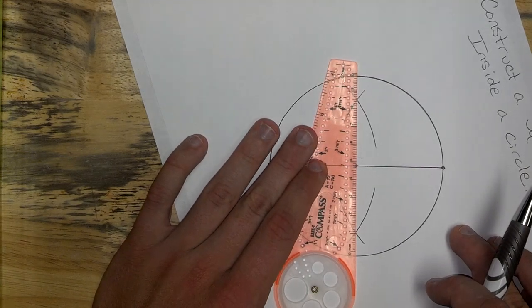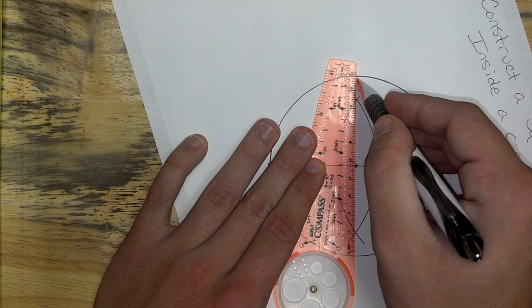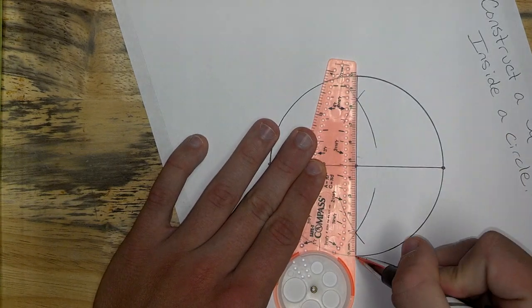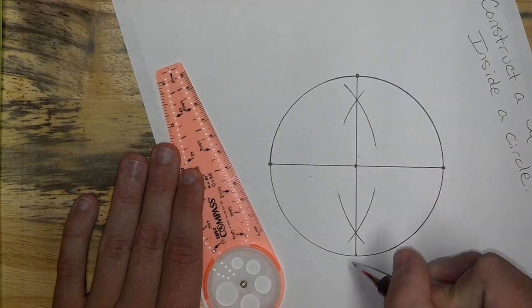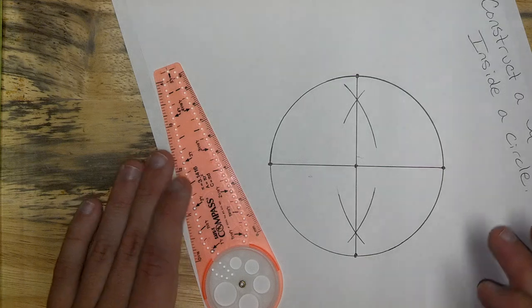If I connect the two points, just like so, I'm going to have that perpendicular bisector. Which gives me two more endpoints out on my circle. Now I have four of them, and they're all evenly spaced around my circle.